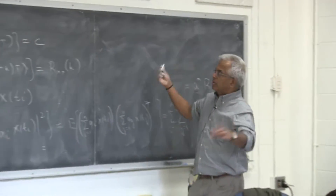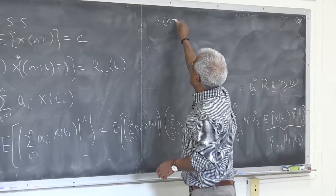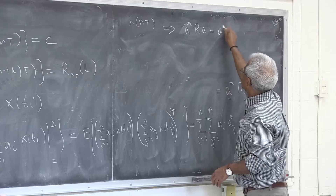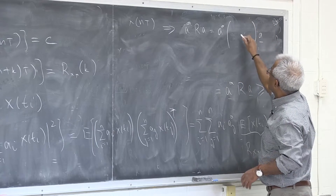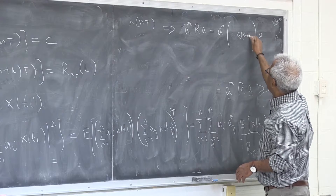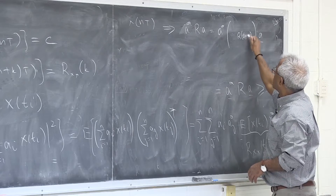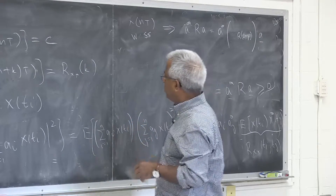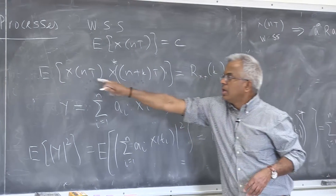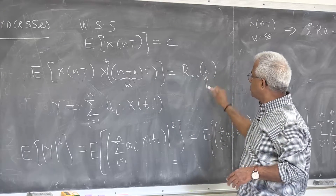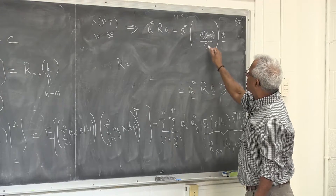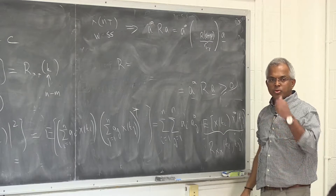This holds whether in the discrete domain or continuous domain. If the process is also wide-sense stationary, we proved that the autocorrelation only depends on n minus m. So R_ij = R(i minus j). Let me draw this matrix — for notational convenience I'll call each entry R(i minus j) — and ask: what does this matrix look like for a discrete wide-sense stationary process?